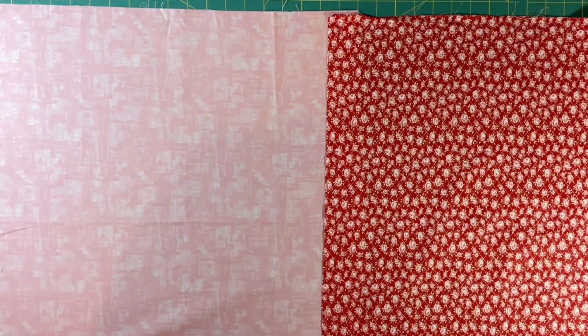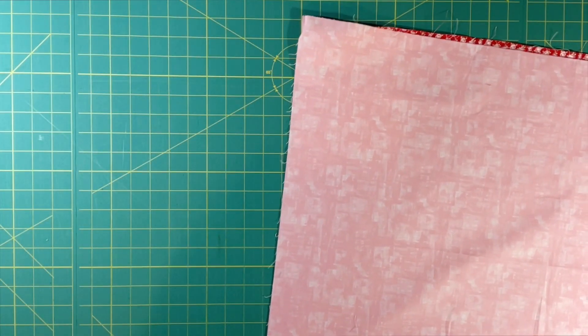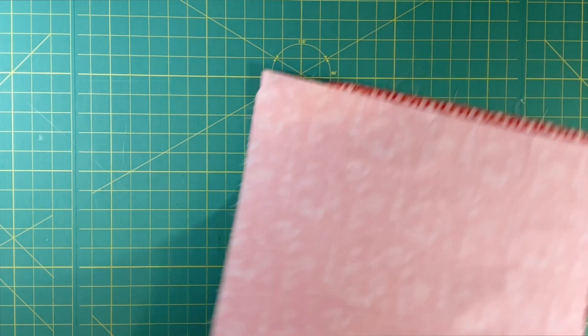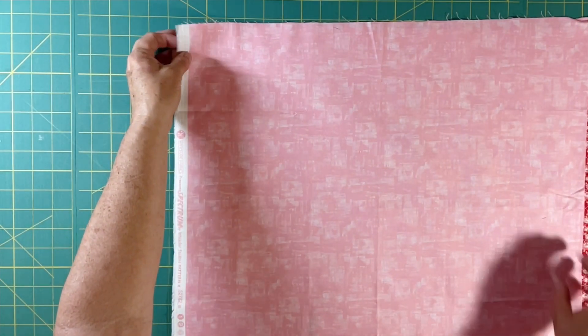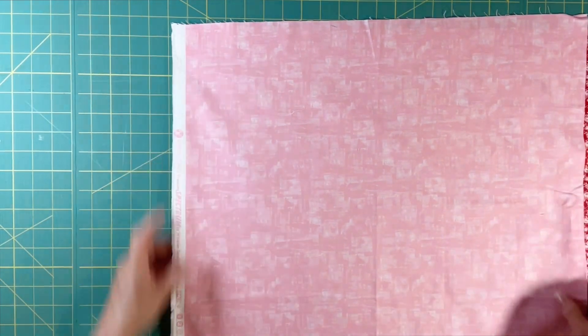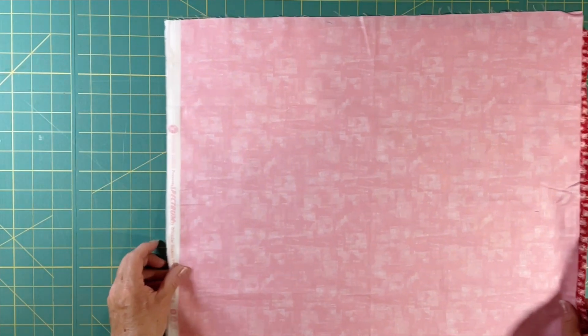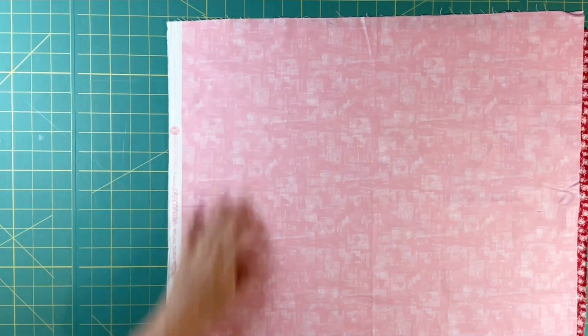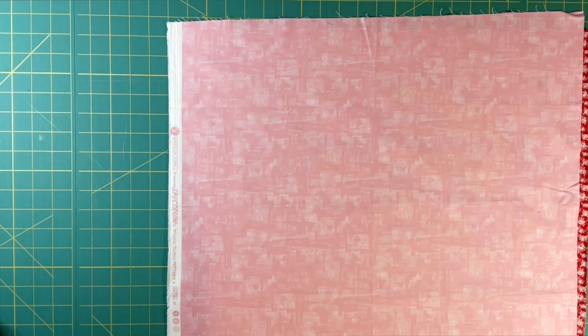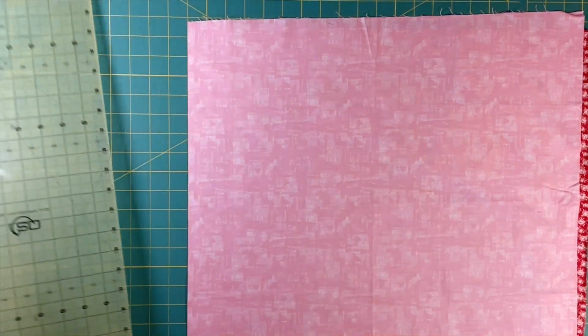We're going to start by taking these two fat quarters and cutting them down to 16 inch squares. I'm just going to go ahead and match up these selvedges on these two pieces and use the lines on my mat to kind of line those up to get a starting point.